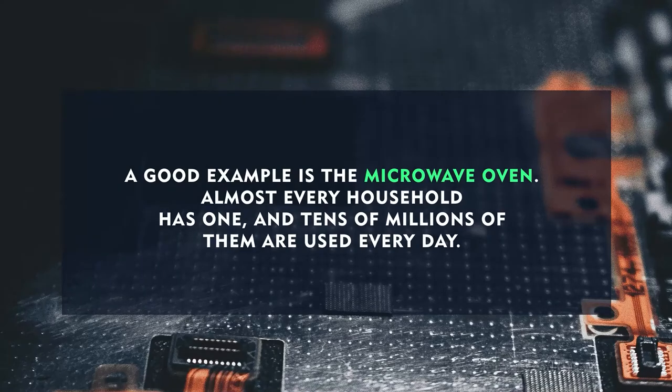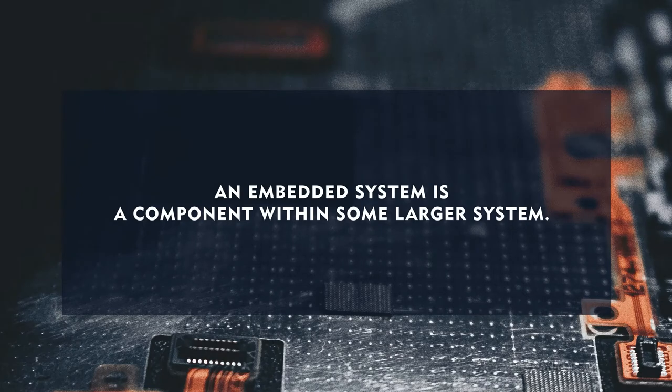Taking examples, the microwave oven that we use has an embedded system built in. Almost every household has one and tens of millions of them are used every day. Frequently, an embedded system is a component within some larger system. It is like a processor or microcontroller which caters to a special function.